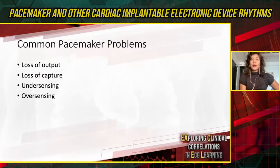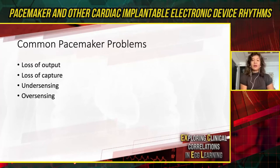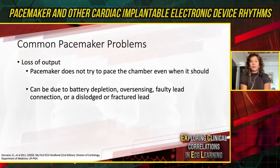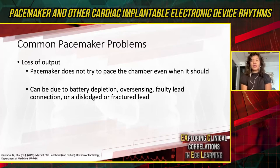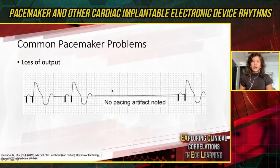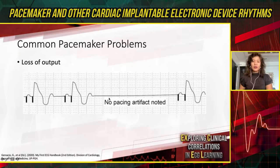Let's go to some pacemaker troubleshooting, covering loss of output, loss of capture, under-sensing, and over-sensing. In loss of output, the pacemaker does not even attempt to pace the chamber. Possible causes include battery depletion, over-sensing, faulty lead connection, or dislodged or fractured leads. On the ECG example, towards the middle portion of the tracing, there are no pacing spikes and no activity from the pacemaker.